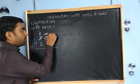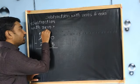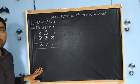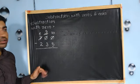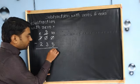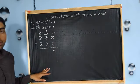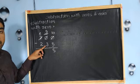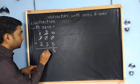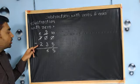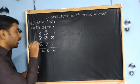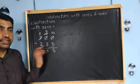We will borrow one at one's place from tens. Nine will remain, and this zero will become ten. Now do the subtraction: ten minus five equals five. Nine minus three equals six. Six minus two equals four. The answer is four hundred and sixty-five.